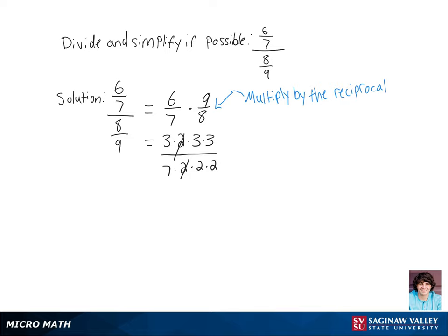We can cancel a 2 on the numerator and the denominator, which leaves us with 3 times 3 times 3 on the numerator, which is 27, and 7 times 2 times 2 on the denominator, which is 28. So our final answer is 27 over 28.